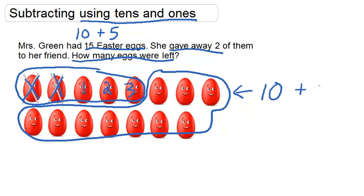So the number of eggs left is going to be equal to 10 plus 3, which is 13.